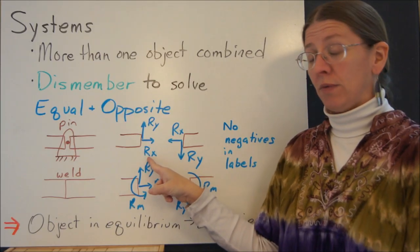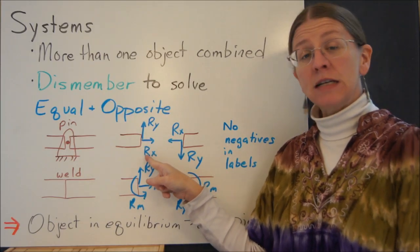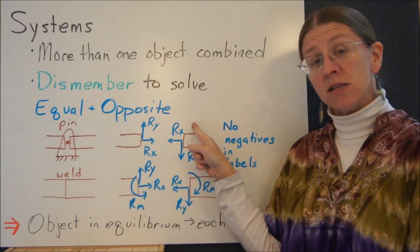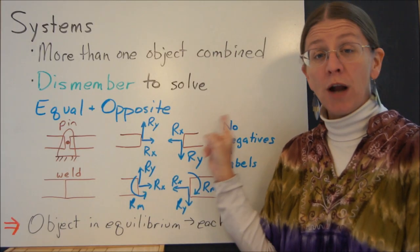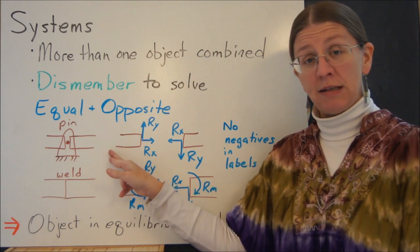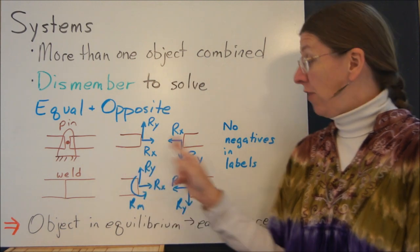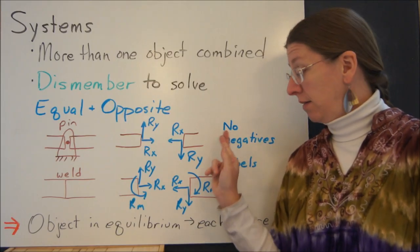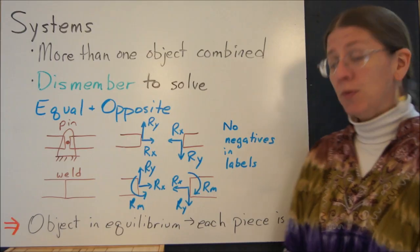Generally, when you do this, not generally, always, this Rx variable is the same number as this Rx variable, because these are equal and opposite. So if Rx turns out to be 4 when you solve the equations of equilibrium for this side, then Rx is going to be 4 when you solve the equations of equilibrium for this side.